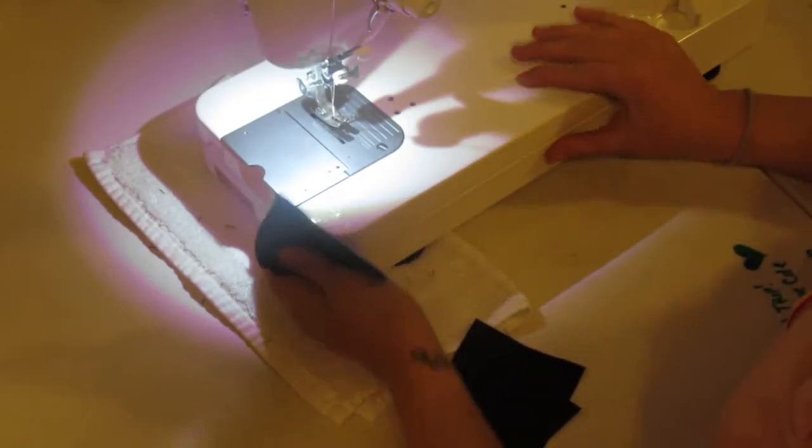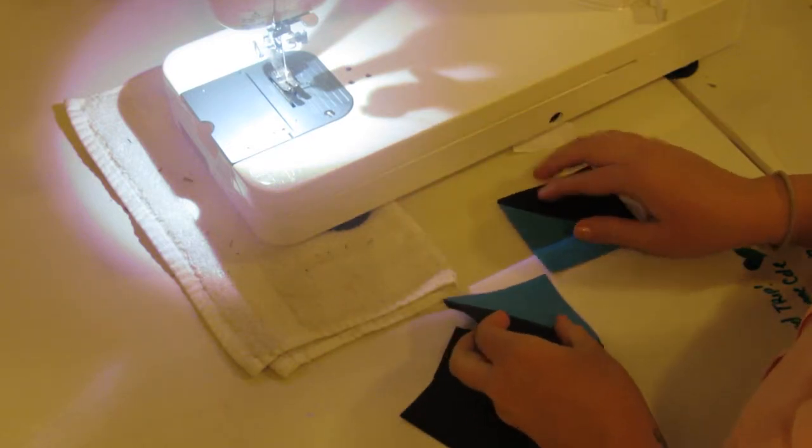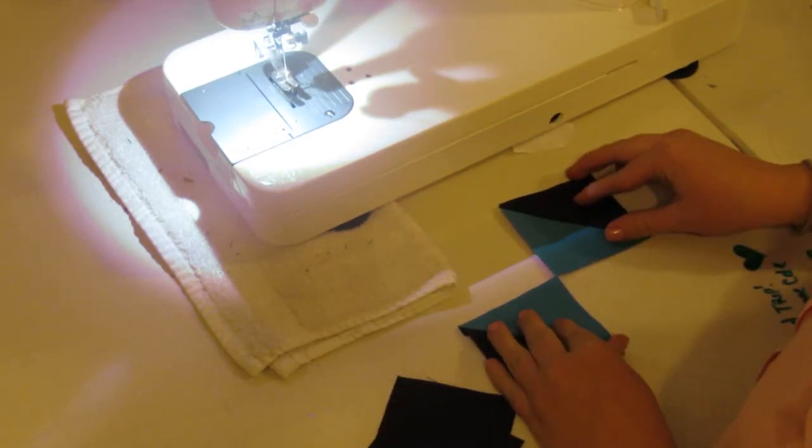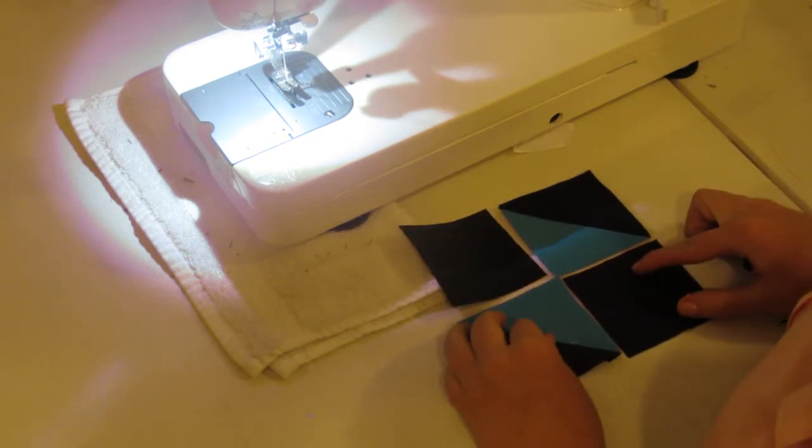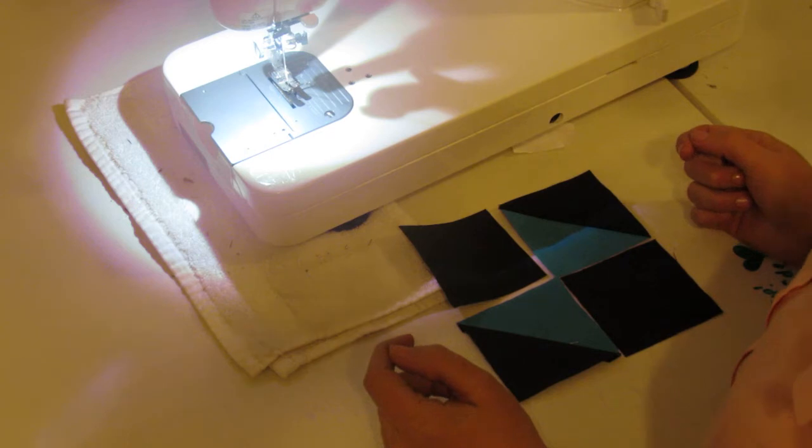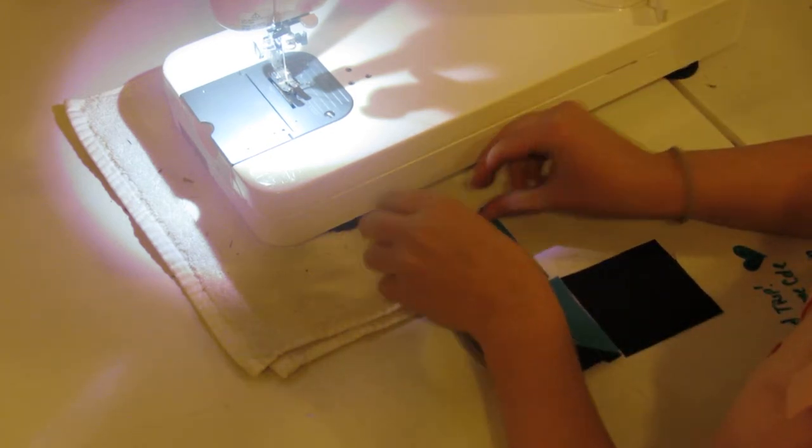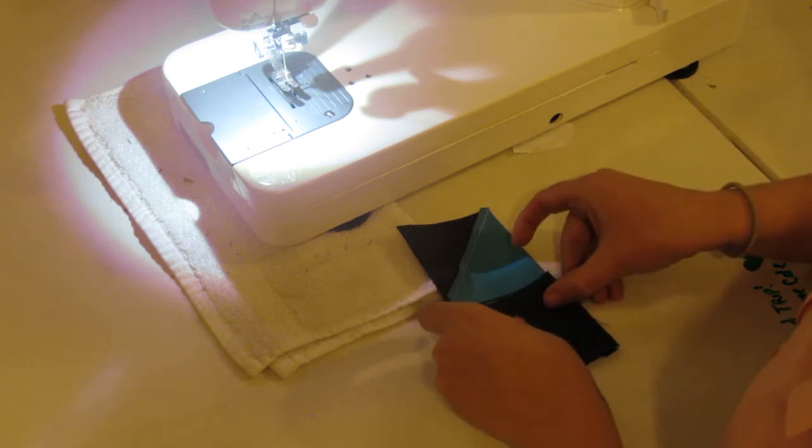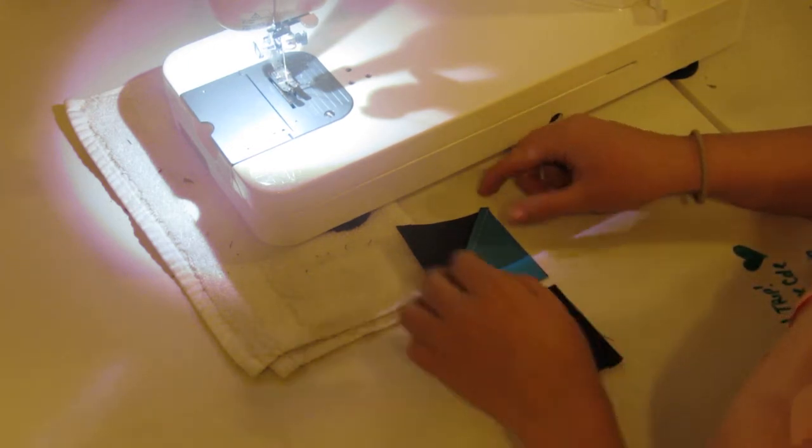To finish this block, we're simply going to lay it out where our light blue are touching each other. And then our other two pieces are going to go in the other corners. And then we're just going to sew it like a four patch. So we're going to flip this one over and flip this one over, and then sew a quarter inch down the sides.